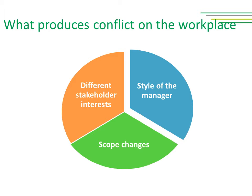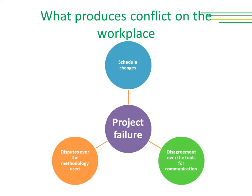The second step we are going to discuss is what produces conflicts at the workplace. They can be defined in seven different reasons, which vary from different stakeholder interests, style of the manager, scope changes, schedule changes, project failure, disputes over the methodology used, or disagreement over the tools of communication.